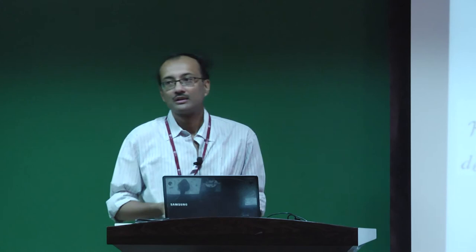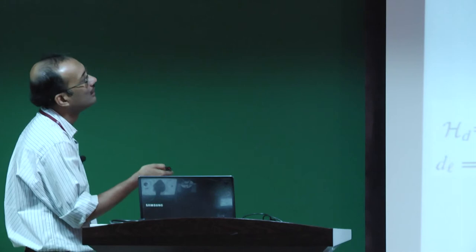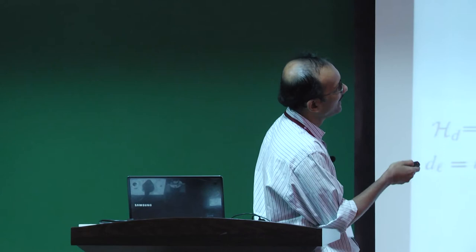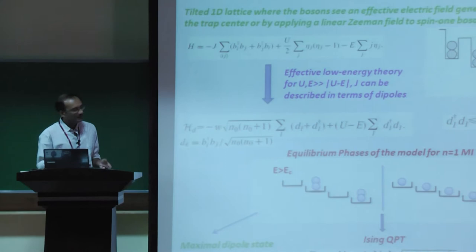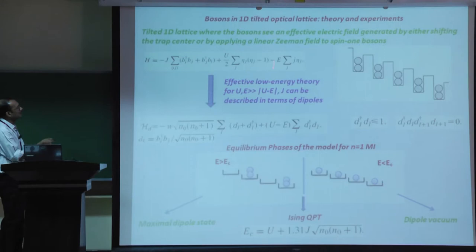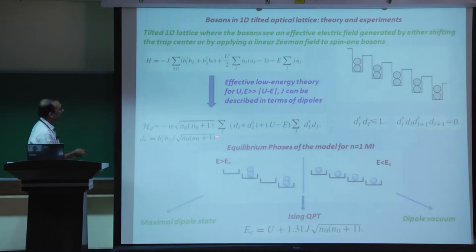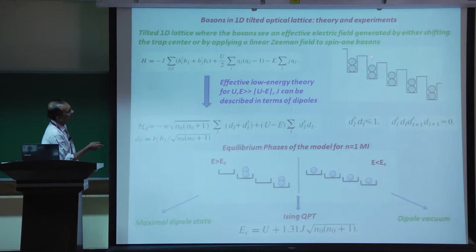In this model, you apply an effective electric field by either shifting the trap center of the bosons - since a parabolic trap shift acts like a linear term equivalent to an electric field - or by applying a Zeeman term linearly dependent in space for spinor bosons. Either way you generate an electric field, and in the presence of a lattice you have a tilted lattice.